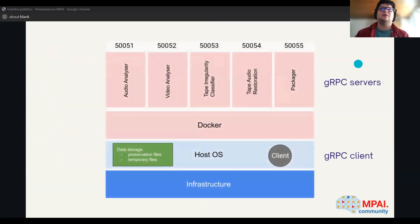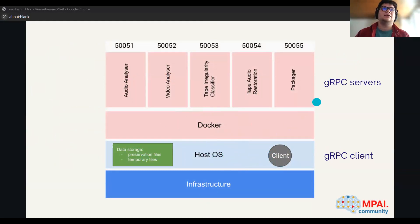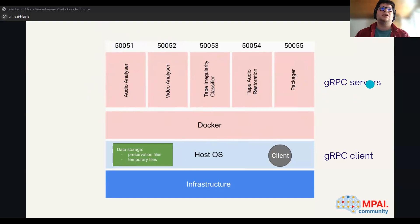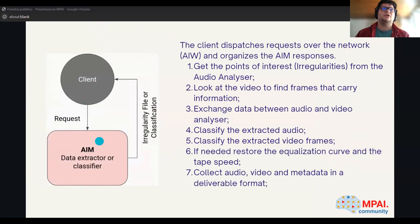The software is based on a client-server architecture. The client can be on the host machine, and we dockerize the servers — the modules already shown in Marina's presentation. We have the audio analyzer hosted at port 5050-51, the video analyzer at 52, tape irregularity classifier, tape audio restoration, and the packager. They communicate with the gRPC standard. The client sends dispatch requests to the different modules and each time receives a different response — an irregularity file, classification result, or stored file.